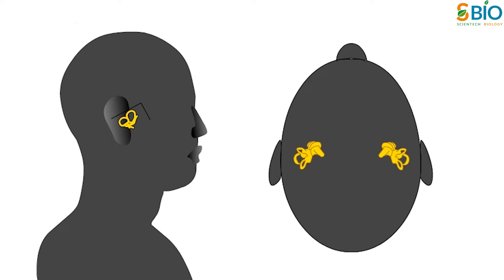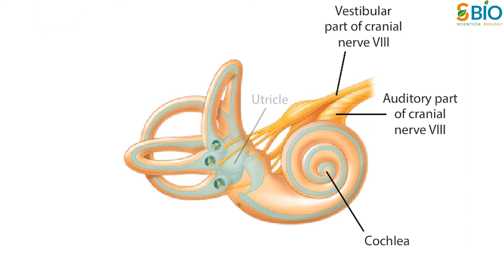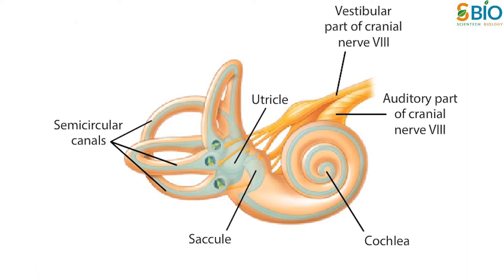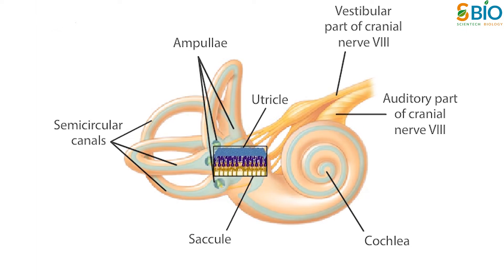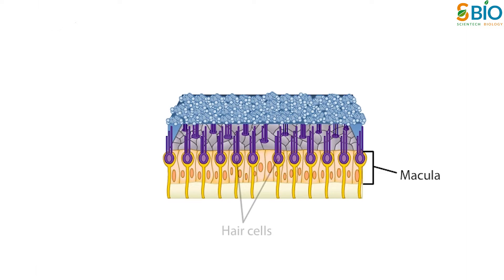The labyrinth consists of two otolith organs — the utricle and the saccule — and three semicircular canals. The vestibular hair cells, which like cochlear hair cells transduce minute displacement into behaviorally relevant receptor potentials, are located in the utricle and saccule and in three jug-like swellings called ampullae located at the base of the semicircular canal next to the utricle. In the utricle and saccule, the sensory epithelium or macula consists of hair cells and associated supporting cells.